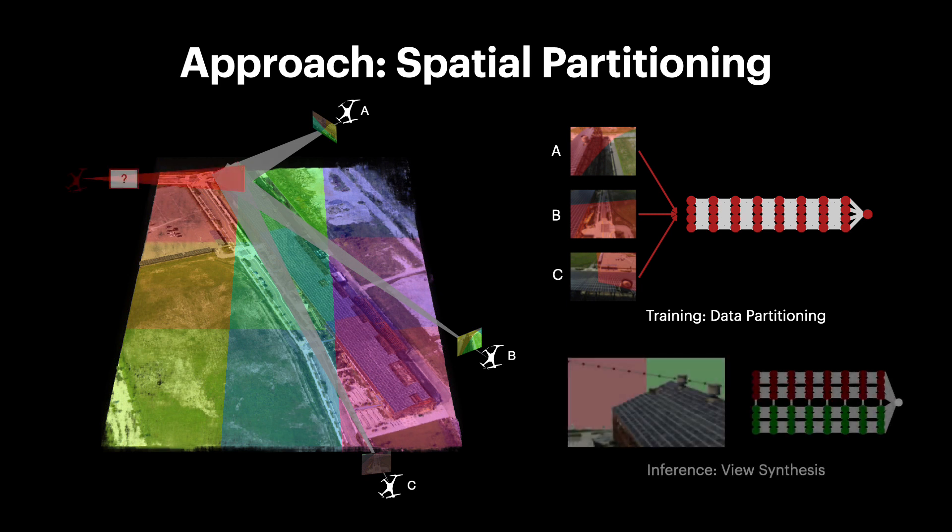To generate new views for virtual flythroughs, we make use of standard NeRF raycasting and point sampling, but query the encompassing submodule for each sampled point.